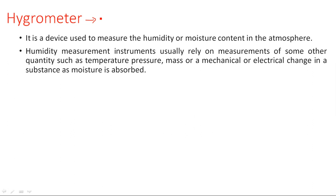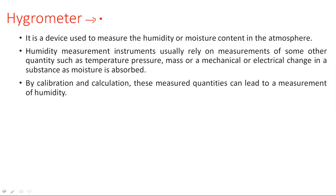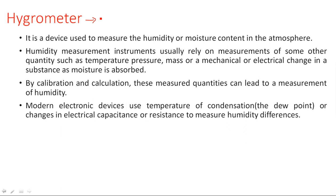Previously the device had a constant resistance; whenever moisture or humidity changes, the device resistance varies. The same concept applies to the hygrometer: the resistance, capacitance, or inductance of the measured instrument varies depending on changes in atmospheric humidity. Modern electronic devices use temperature of condensation, the dew point, or changes in electrical capacitance or resistance to measure humidity differences.